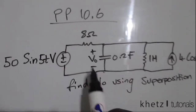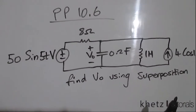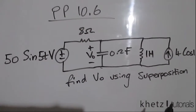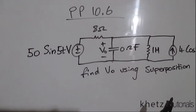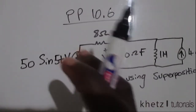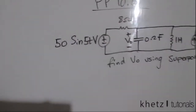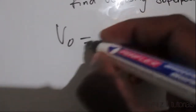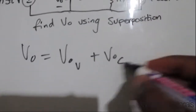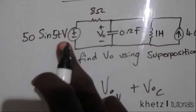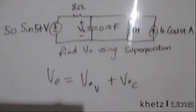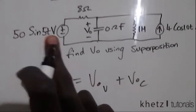We are asked to find VO, which is indicated across the capacitor, using superposition. With superposition, we consider the contribution of all the independent sources and add them up. As we deal with one independent source, we turn the other ones off. So the total VO equals the contribution of the voltage source plus the contribution of the current source. We only have two independent sources, so we add the contributions of these two: a voltage source and a current source.